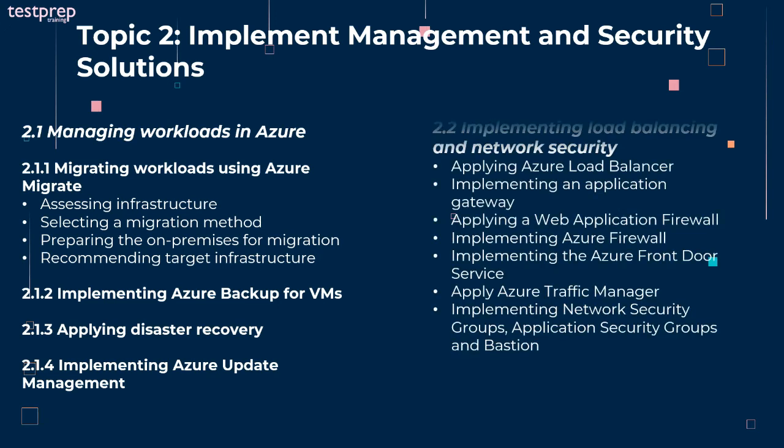Second, implementing load balancing and network security, divided into seven parts: applying Azure Load Balancer, implementing an Application Gateway, applying a Web Application Firewall, implementing Azure Firewall, implementing the Azure Front Door Service, applying Azure Traffic Manager, and implementing Network Security Groups, Application Security Groups, and Bastion.